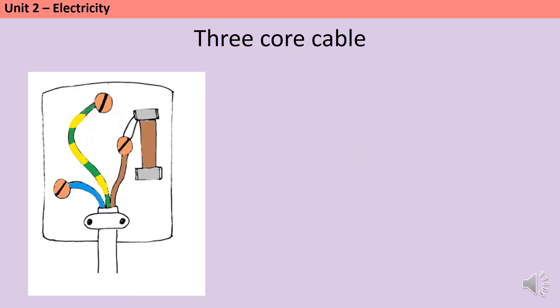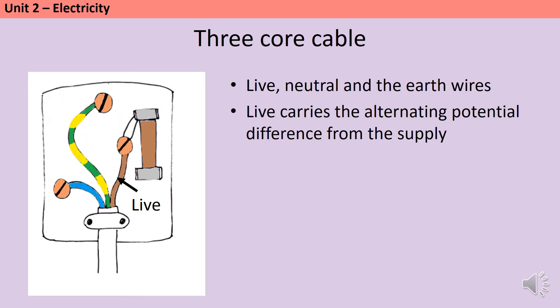You need to know the locations, colours and functions of the 3 wires in the 3-core cable. These are called the live wire, the neutral wire and the earth wire. Firstly, the live wire. This is on the bottom right of the plug, so if you remember BR for bottom right and BR for brown. The live wire carries the alternating potential difference from the supply. You can think of it as how the electricity gets into the appliance.